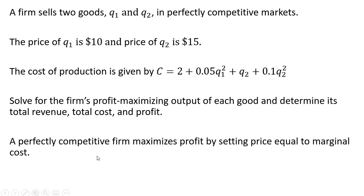A perfectly competitive firm maximizes profit by setting price equal to marginal cost. We're going to set the price for Good 1 equal to the marginal cost of Good 1 and then set the price of Good 2 equal to the marginal cost of Good 2.